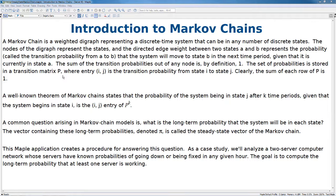The nodes of the diagram represent the states, and the directed edge weight between two states A and B represents the probability, called the transition probability from A to B, that the system will move from state B in the next time period given that it is currently in state A.